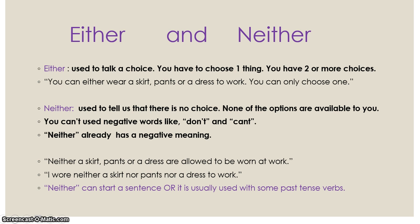Either and neither. Either is used to talk about a choice — you have to choose one thing from two or more options. For example: 'You can either wear a skirt, pants, or a dress to work — you can only choose one.' Neither is used to tell us that there is no choice; none of the options are available. You can't use negative words like don't or can't with neither, because neither already has a negative meaning. For example: 'Neither a skirt, pants, nor a dress are allowed at work.' Neither can start a sentence or appear in the middle with a past tense verb.